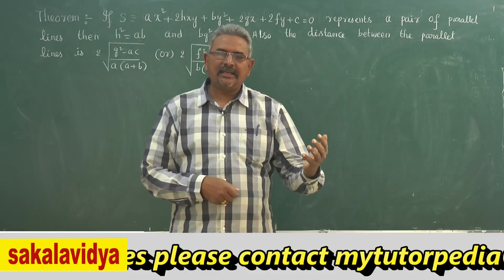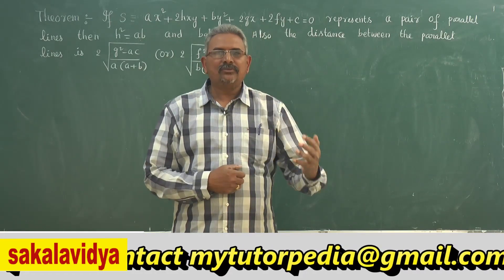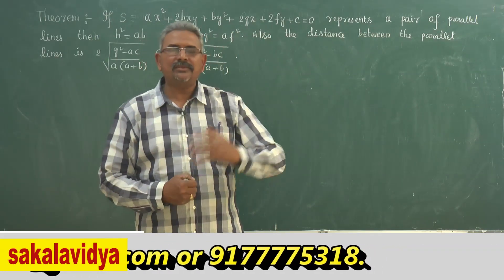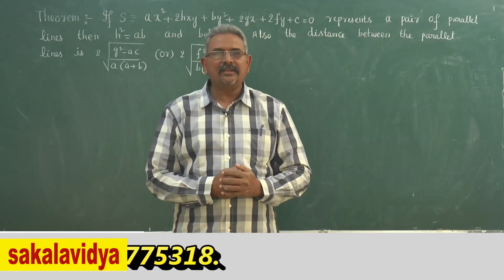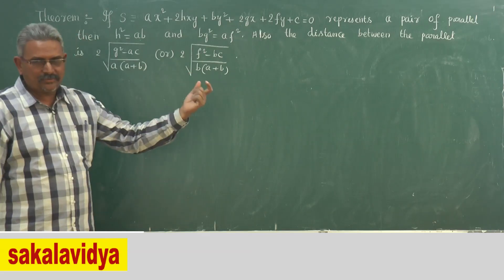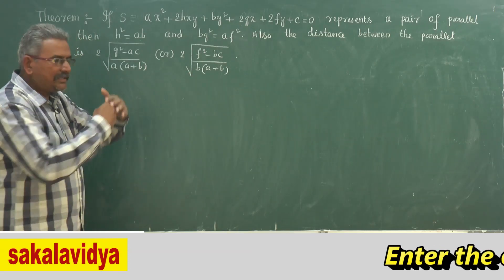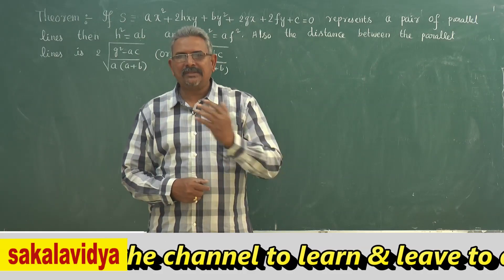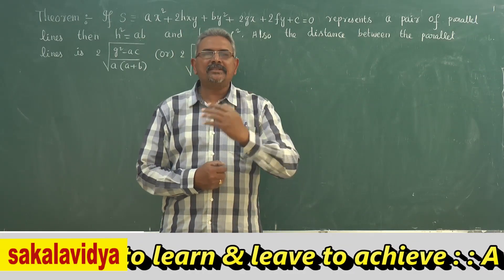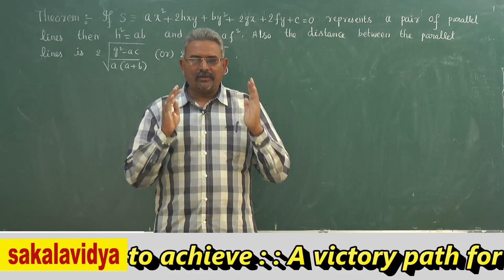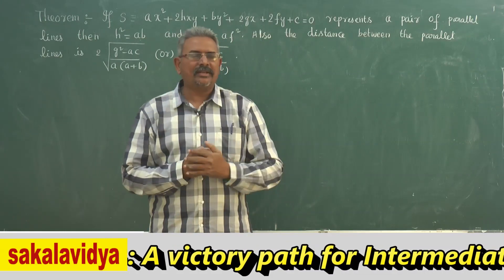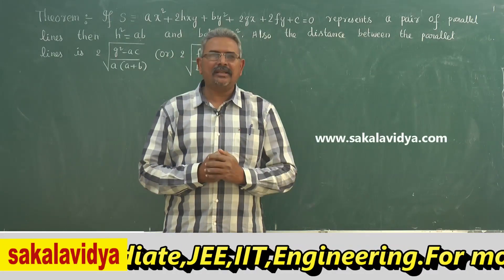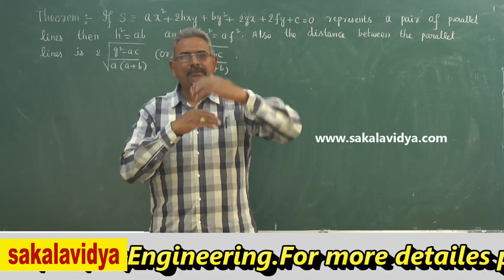By comparing the coefficients of x², y², xy, x, y, and constant terms on both sides respectively, we get the required values. After that, we need to prove H² = AB and AF² = BG². The distance between two parallel lines Ax + By + C1 = 0 and Ax + By + C2 = 0 is given by |C2 - C1| / √(A² + B²), as already studied in straight lines.